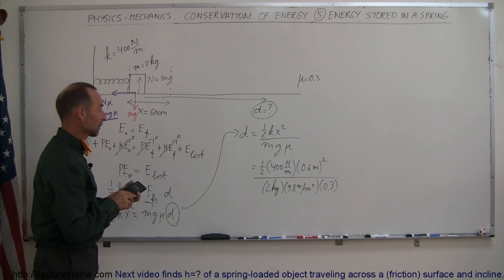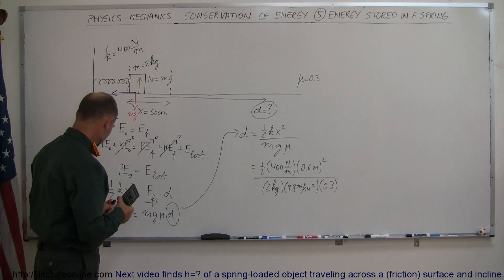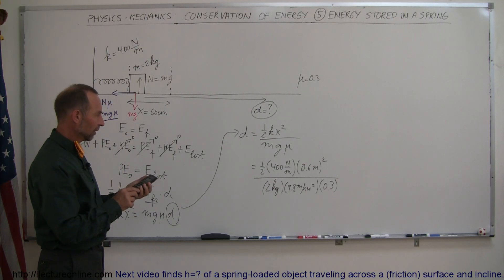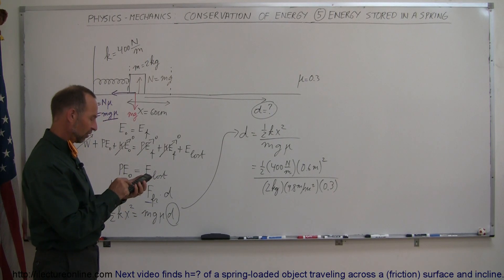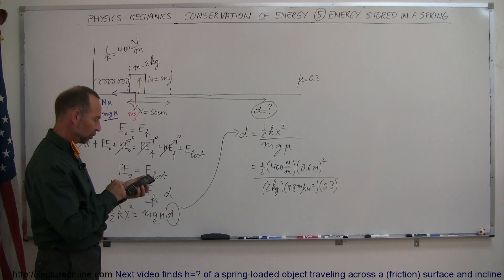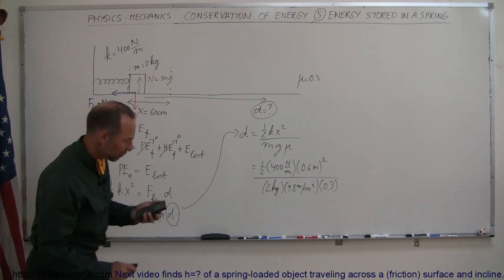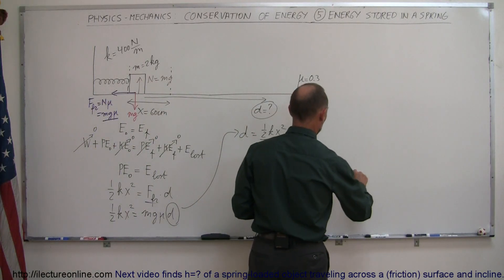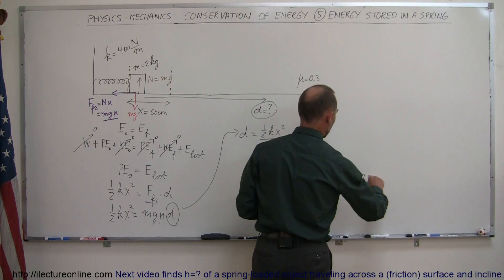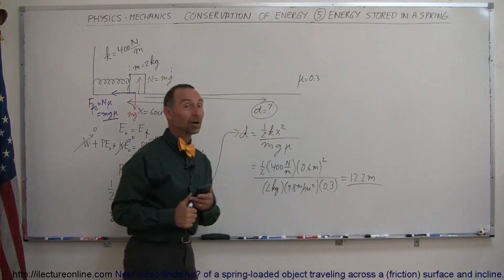Then we need a calculator to figure out what that is equal to. All right, so we have 0.6 squared times half of 400—that's times 200—divided by 2, divided by 9.8, and divided by 0.3, and we get 12.24 meters.